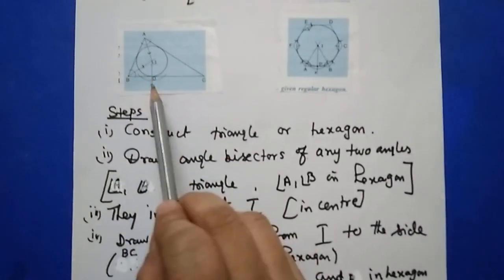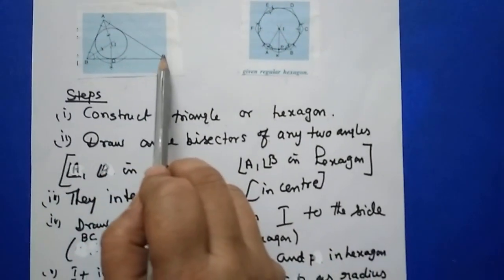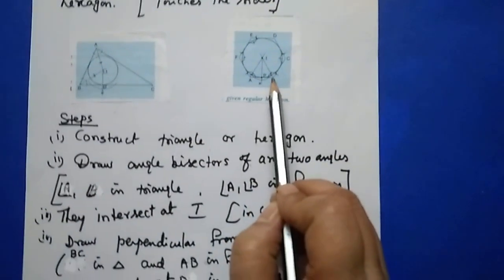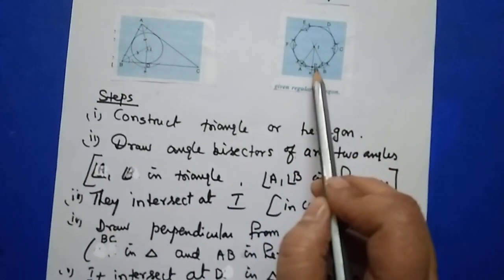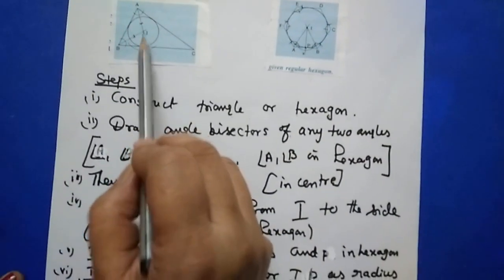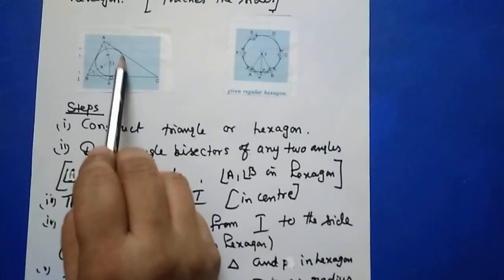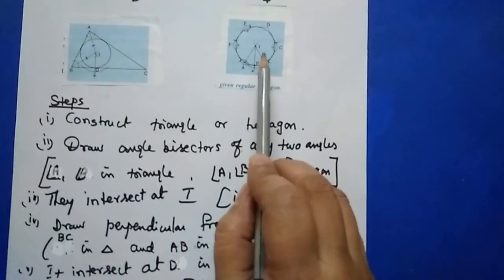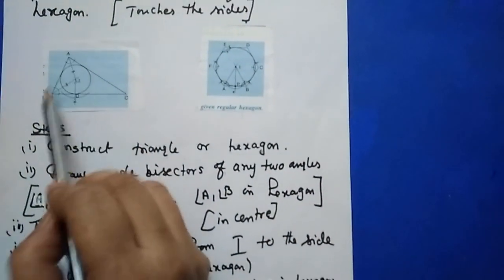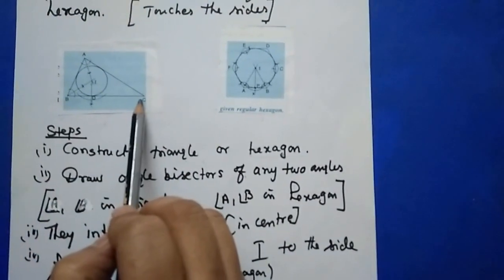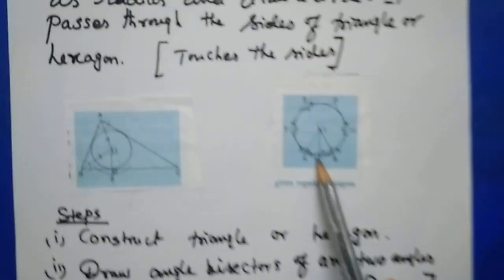From I, draw a perpendicular to any one of the sides. Here ID is perpendicular to BC, and IP is perpendicular to AB — this perpendicular distance is the radius of the incircle. With I as center and ID (or IP) as radius, draw a circle. This is the incircle. The sides of the triangle or hexagon are tangents to this circle.